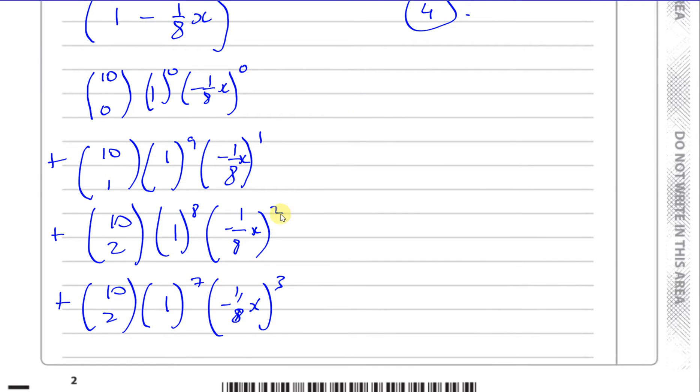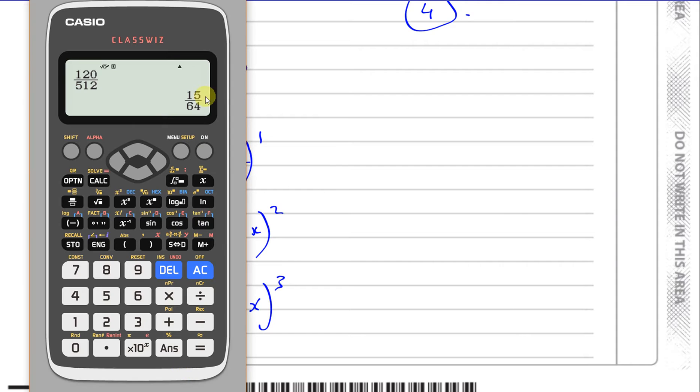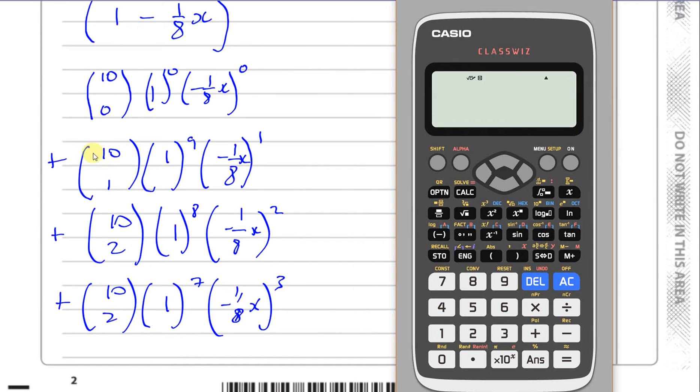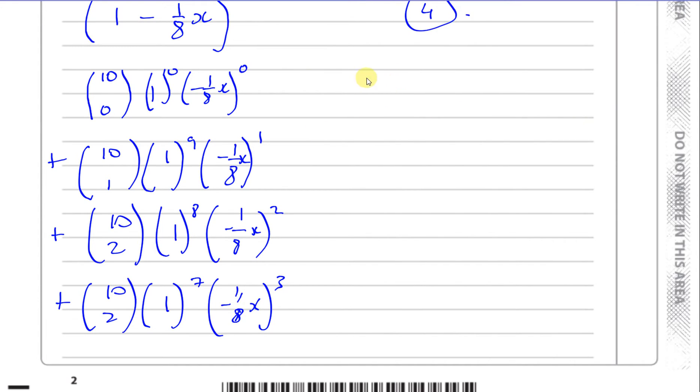And so you're going to end up with the following. You can use your calculator button to find the coefficients. So you press 10, and then you see this NCR button, shift, press that button, and you press 1. I know it's going to give me 10. 10, 0 first, that's why. 10, 0, that's going to give me 1. So that's going to be 1 times 1 times 1, which is 1.